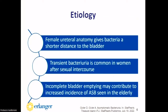Why does ASB occur? We tend to think of this more commonly in females, given the shorter distance of their urethra, which provides bacteria a shorter distance to travel to the bladder. But commonly this is transient and can be cleared through urination. In elderly patients, another risk factor can be incomplete bladder emptying, seen in patients with BPH, for example. But as mentioned, it is benign and should not be treated.